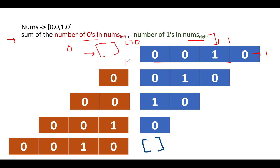Splitting at i equals 1, the left sub-array has [0] and the right sub-array has [0, 1, 0]. The number of zeros in the left is 1 and the number of ones in the right is 1. So 1 plus 1 gives a score of 2, which is higher than the previous score.